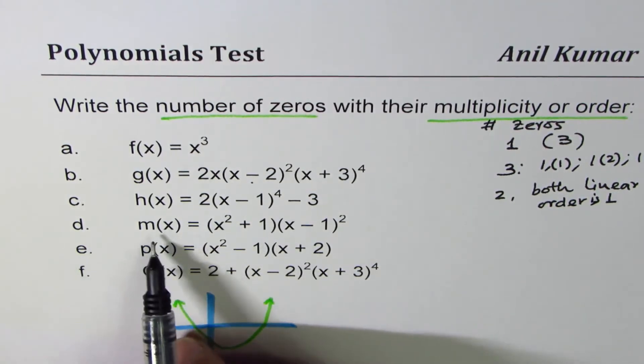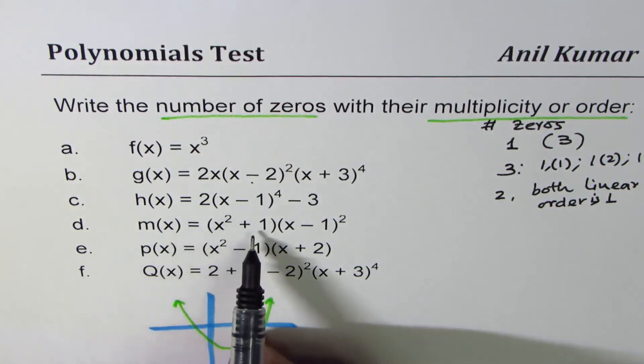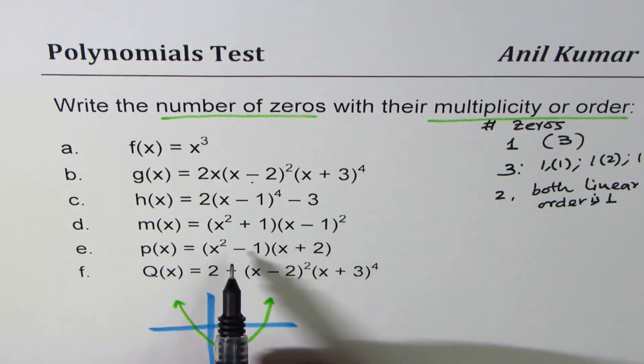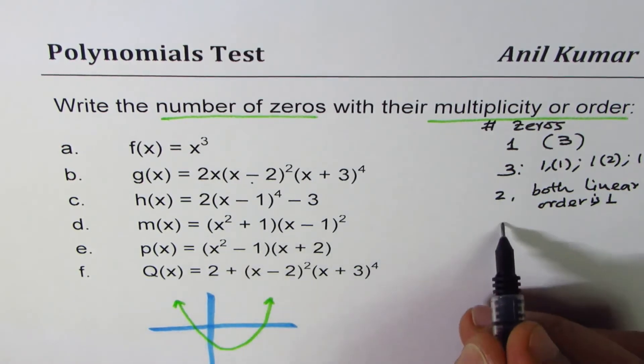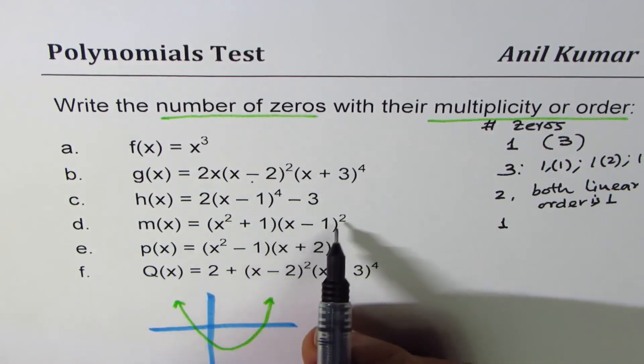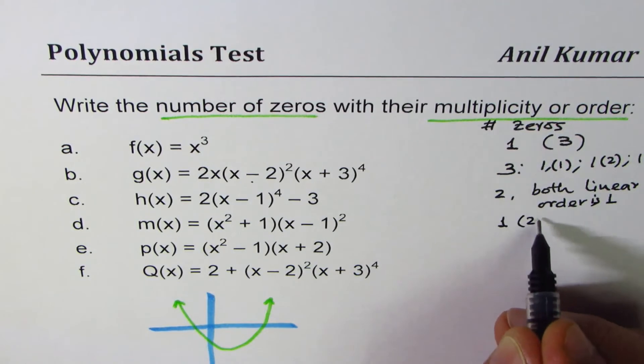Then we have d: m(x) = (x²+1)(x-1)². x²+1 is always positive, there's only one zero here and the order of this zero is two.